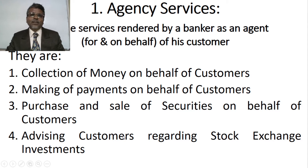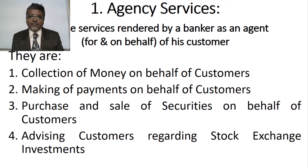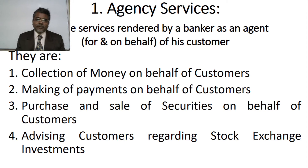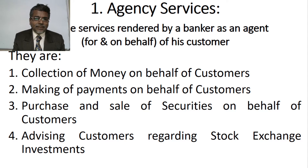The first variety is agency services — the services rendered by the banker as an agent for and on behalf of his customer. The first agency service is collection of money on behalf of customers, where the banker collects money from others on behalf of the customer. The second is making payment on behalf of customers — if the customer instructs the banker to pay money to others, the banker will pay the person mentioned by the customer.